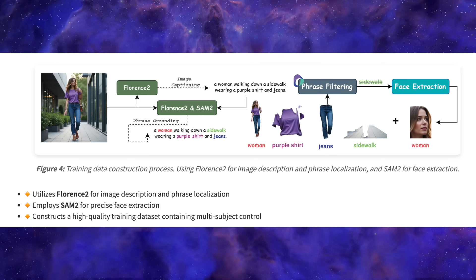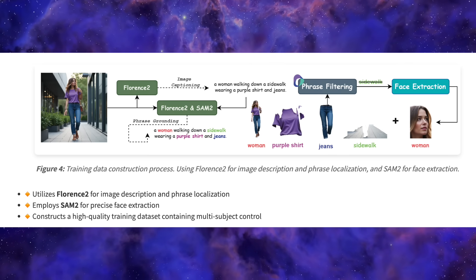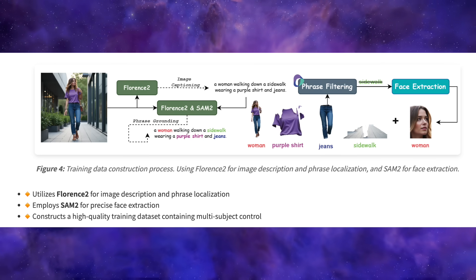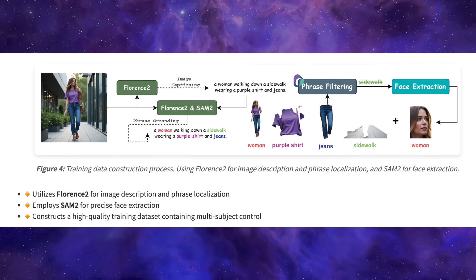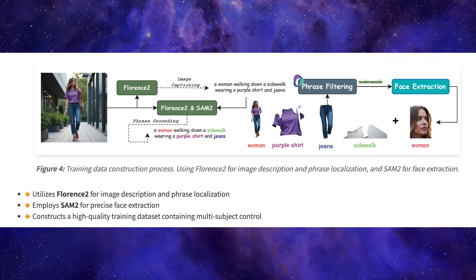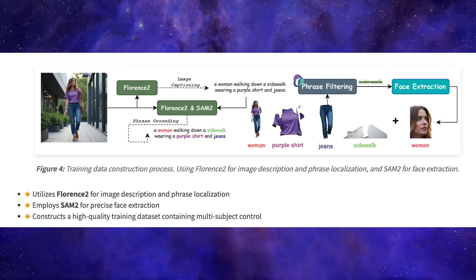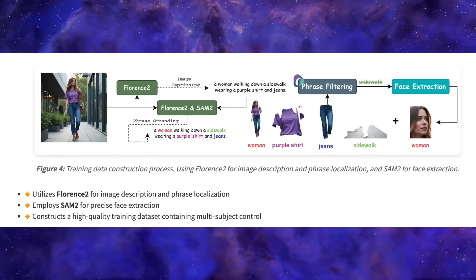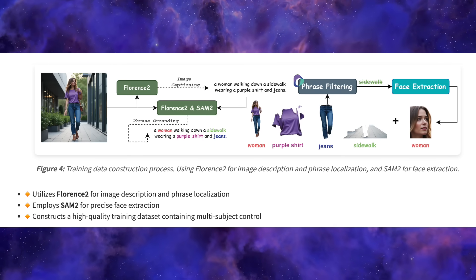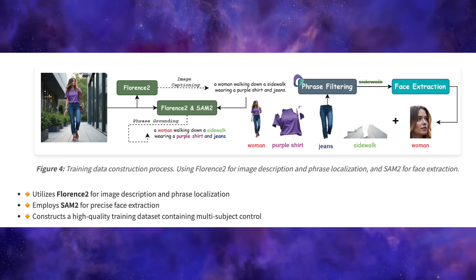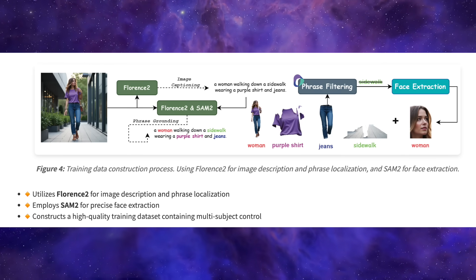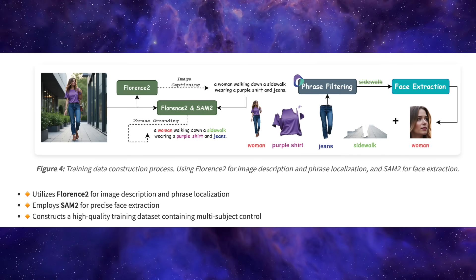And it's smart about it too. It uses phrase filtering to ignore boring background stuff we don't care about, like the sidewalk. Then, for the most important part — the person's identity — it uses another powerful model called SAM-2 to perform precise face extraction. This step is absolutely critical because it ensures the AI is learning the specific facial features that define a person's unique look.